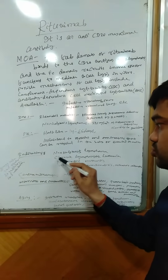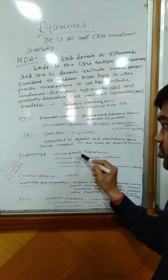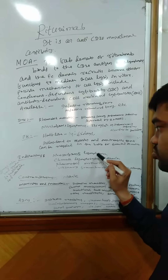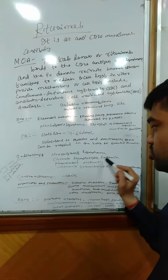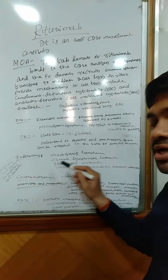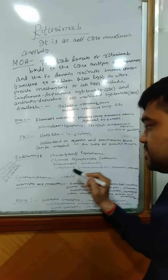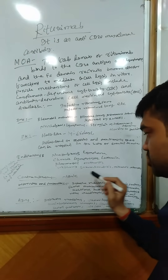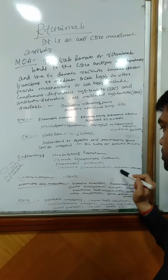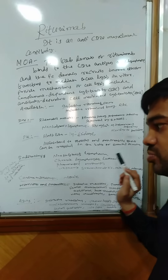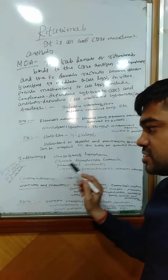Coming to the indications, Rituximab is indicated in non-Hodgkin's lymphoma, chronic lymphocytic leukemia, rheumatoid arthritis, Wegener's granulomatosis, and microscopic polyangiitis, among others.